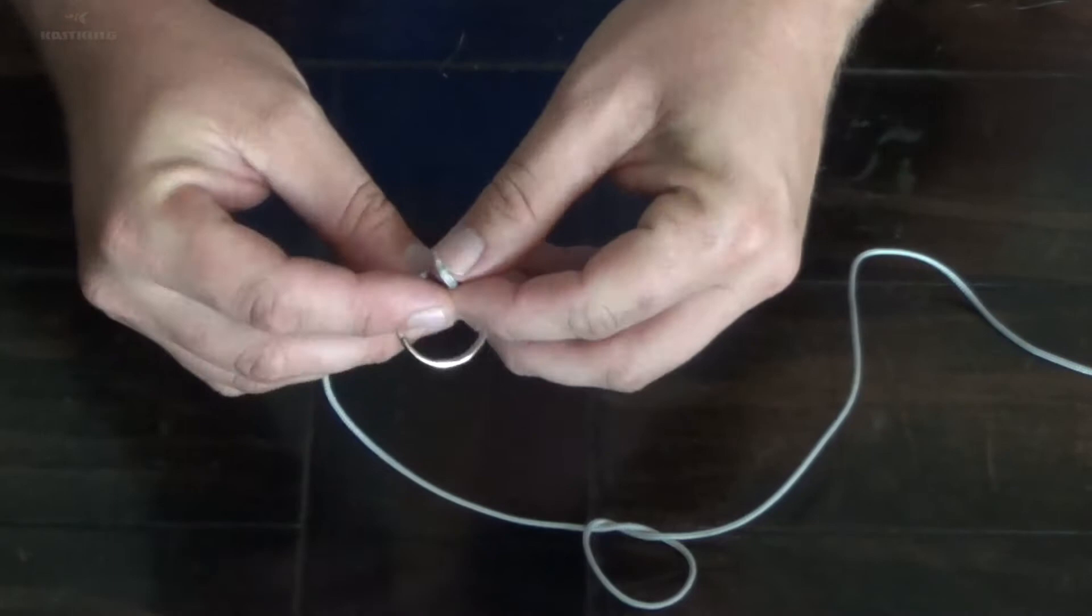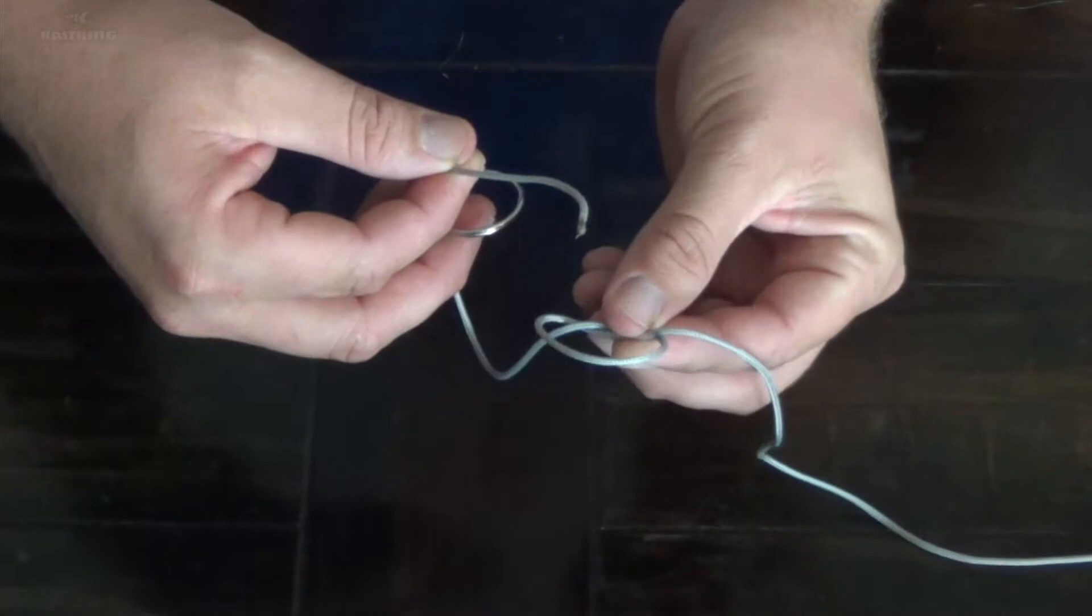At that point you'll take your tag end, pass it through the eye of your fly, and then that tag end goes back through the overhand loop that you made.